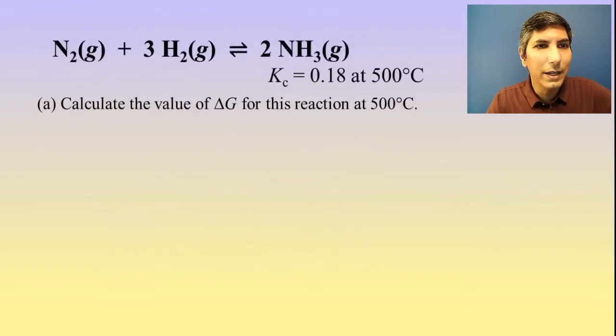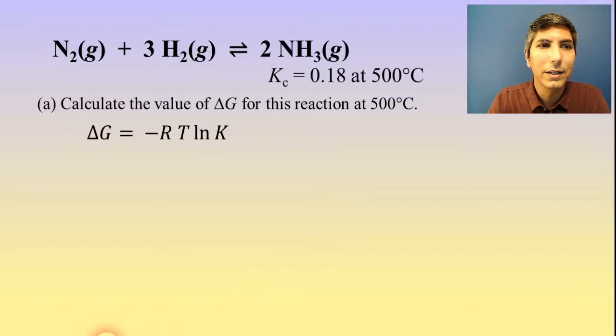So let's try an example. Here we have a chemical reaction that we've worked with many times in this course, the production of ammonia. And we have the equilibrium constant is 0.18 at 500 degrees Celsius. And the question says, calculate the value of delta G for this reaction at 500 degrees Celsius. Well, we're going to have to use that equation.